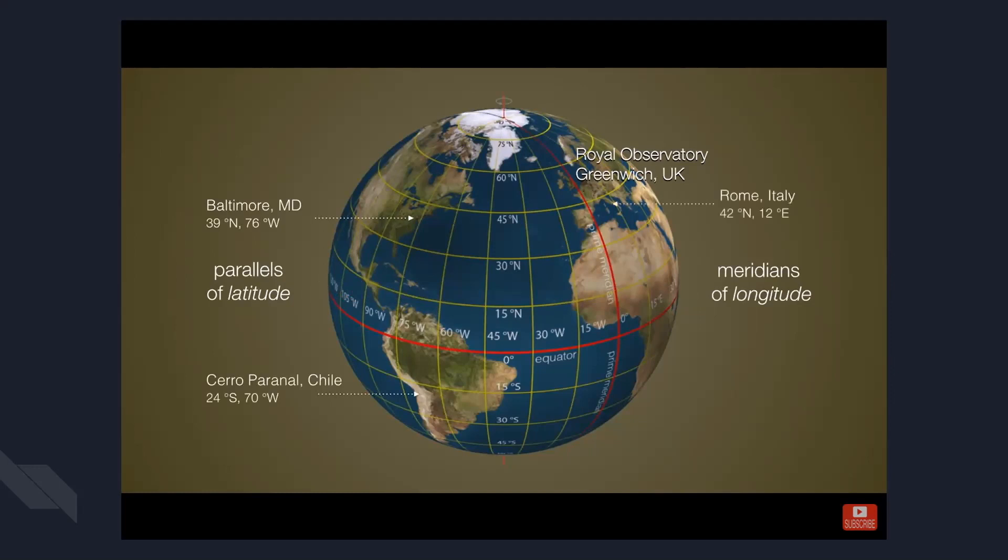And Rome, Italy is 42 degrees north and 12 degrees east. So that places Rome at about the same latitude as Boston, Massachusetts.